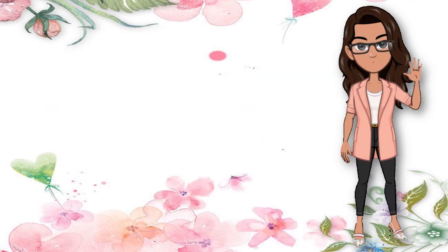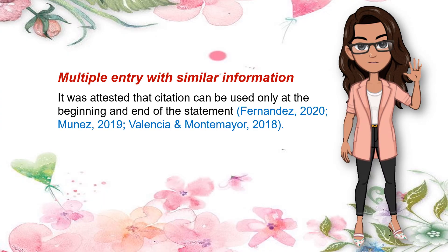But what if you have two or more authors with similar facts or information? If dealing with this scenario, all of them are placed in the same parentheses. However, they are separated with a semicolon. Likewise, authors' names have to be listed in alphabetical order. Multiple entry with similar information example: It was attested that citation can be used only at the beginning and end of the statement (Fernandez, 2020; Munez, 2019; Valencia & Montemayor, 2018).